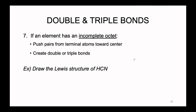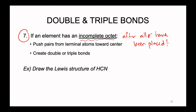Double and triple bonds will arise according to rule seven: if an element has an incomplete octet after all electrons have been placed and the pool is empty, we push lone pairs from terminal atoms toward the center, forcing atoms to share. This creates double or triple bonds where necessary for the greater stability of the molecule.